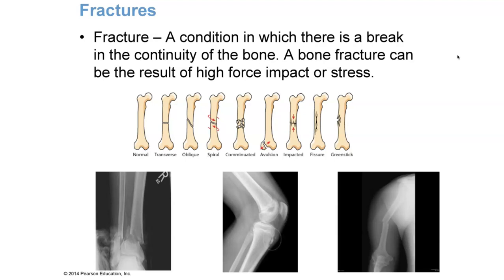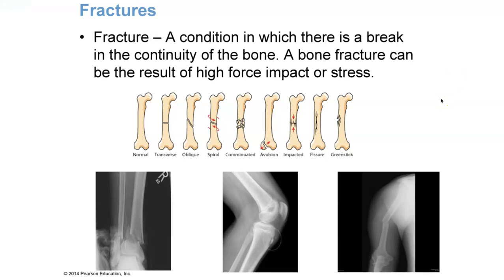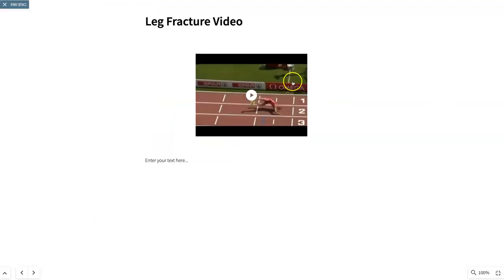Looking at the radiographs: on the right is a transverse fracture of the humerus; in the middle is an avulsion fracture of the knee; and on the left is a comminuted fracture of the ankle where both the tibia and fibula are broken into multiple pieces.